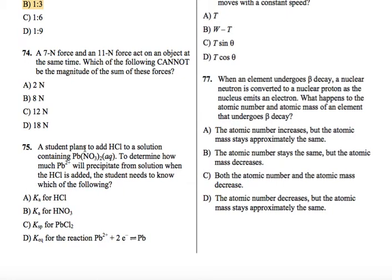74. A 7N force and an 11N force act on an object at the same time. Which of the following cannot be the magnitude of the sum of these forces? So if you have two forces acting on an object, there is a maximum and a minimum net force you can get.